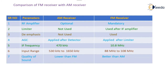The third point is de-emphasis. De-emphasis is not used in AM receiver but it is used in the FM receiver. This involves artificial boosting of the signal at the transmitter and minimizing the boosting at the receiver.